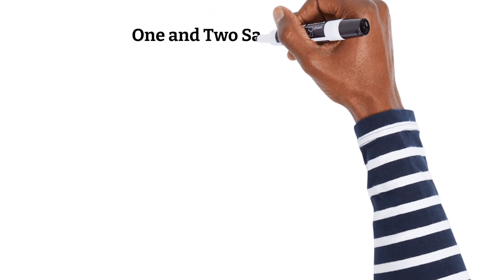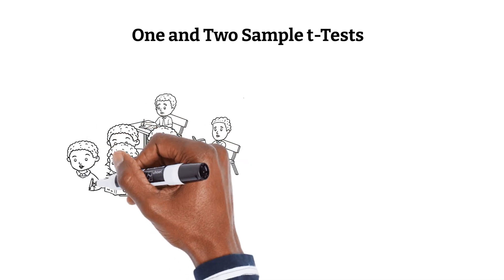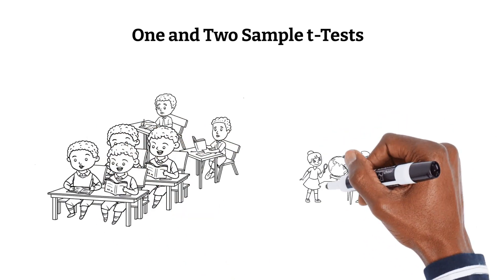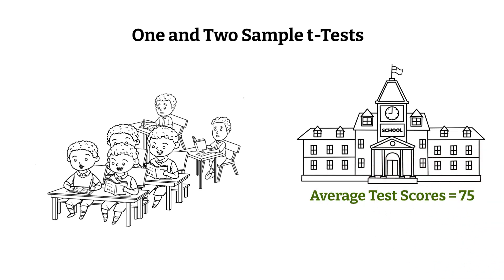In this video, we're going to break down two important statistical tools, the one-sample t-test and the two-sample t-test. These are both used when you're asking questions like, do two different groups have different averages? Is a group's average different from some expected number? Before we can get into formulas, let's first understand what these tests are really about and why they matter.